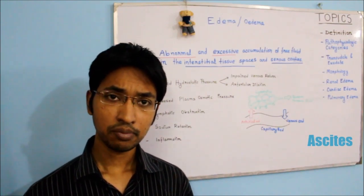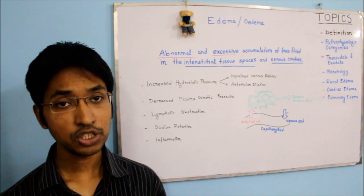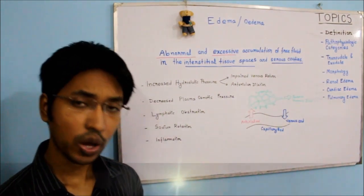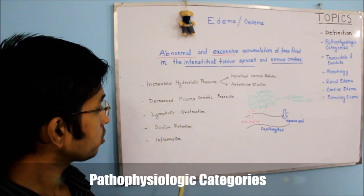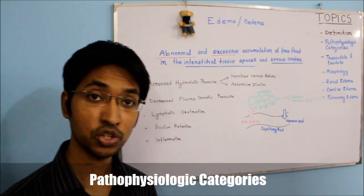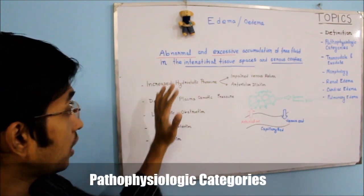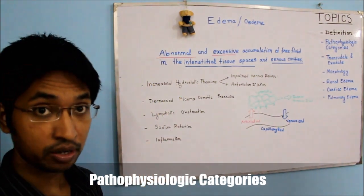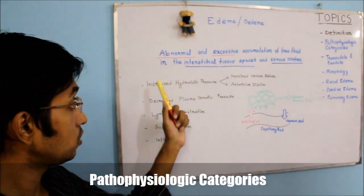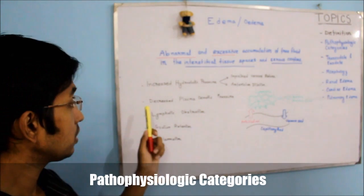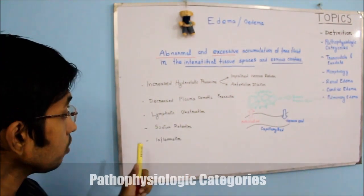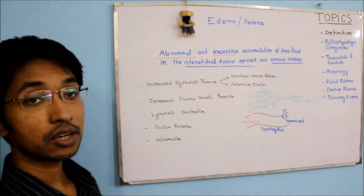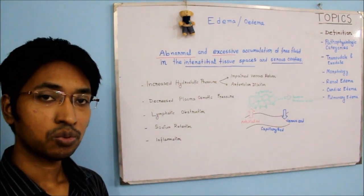Now that we have defined edema, we will move on and talk about the pathophysiologic categories of edema. As you can see on the whiteboard, I have written all the causes of edema. According to pathophysiology, edema can be classified mainly into five major groups: edema due to increased capillary hydrostatic pressure, decreased plasma osmotic pressure, lymphatic obstruction, sodium retention, and inflammation.